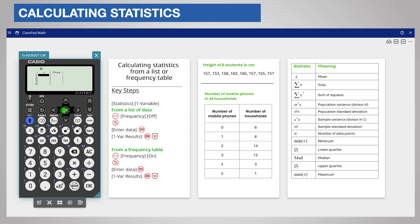First, we will calculate summary statistics from a list of data. Our data is the height of eight students. If you are using the FX 83 or 85 GTCW, you need to turn off the frequency table because the data are a list of values. Press Tools, scroll to Frequency, and choose Off.